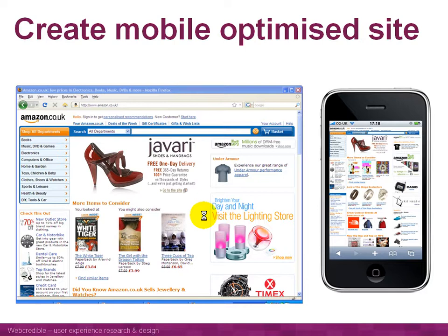Some more advanced phones like the iPhone have the ability to show a PC website. It's great to have that ability, but if you look at how it comes out on these devices, it's not actually that easy to use. We can barely make out the images, let alone the text. We could zoom in and read text in small parts of the screen, but it's much slower, more difficult, and frustrating than viewing the website on a PC.